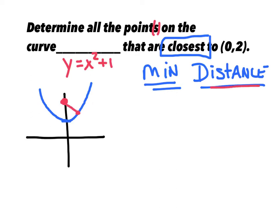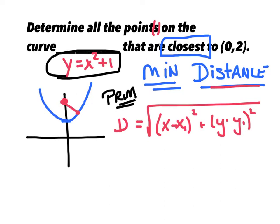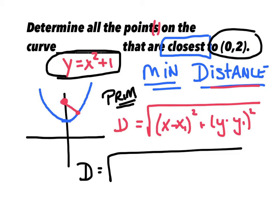Since we know we're minimizing the distance, we have to start with that lovely distance formula. I've got x minus x1 squared plus y minus y1 squared. My goal is to minimize this. This is obviously my primary equation because this is what I want to minimize. I need a secondary equation, and of course that's just going to be the equation that was given. So my distance is — using this point 0, 2, this is my x and this is my y — x minus 0 squared plus y minus 2 squared.